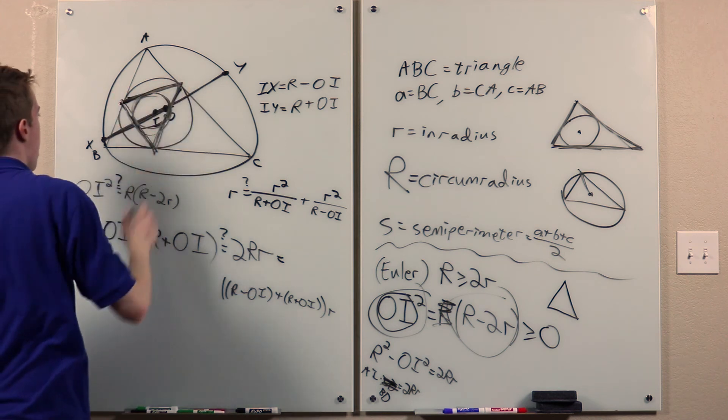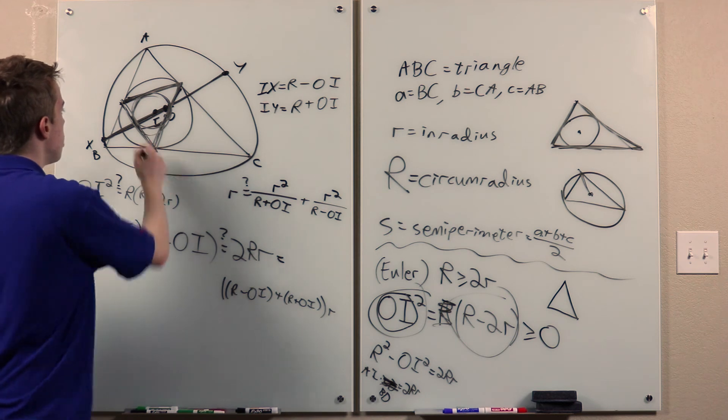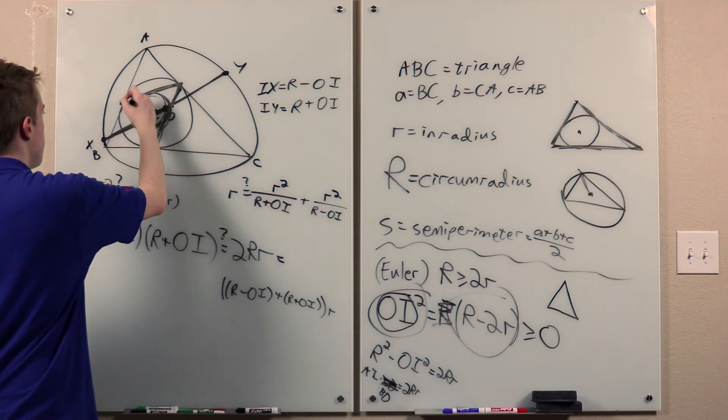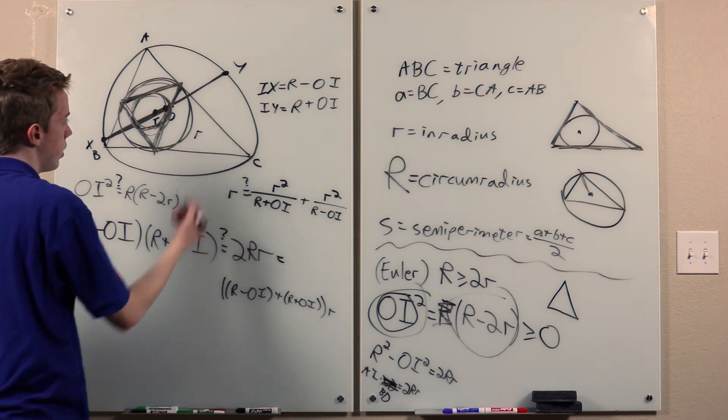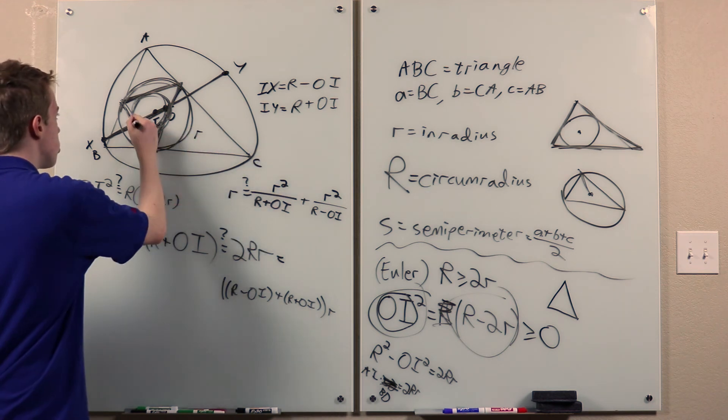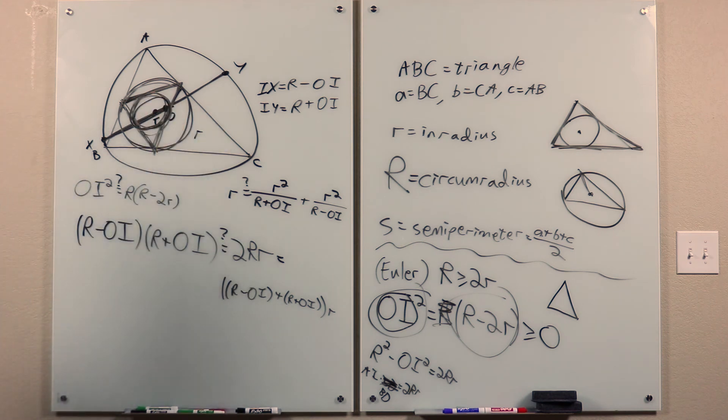So the radius of this circle, since it's the nine-point circle of this triangle, is half the radius of the circumcircle of the contact triangle. But that's just r, the inradius of ABC. So this circle, its radius is r over 2. So its diameter is little r.